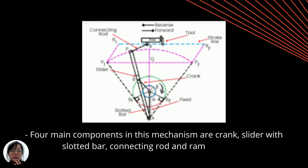The diagram here shows the basic structure of a quick return mechanism. There are four main components: crank, slider with slotting bar, connecting rod, and ramp. The slider is always positioned within the slotting bar and is free to move along the bar. A crank is connected with the gear that rotates at a constant angular velocity. The circle in blue indicates the gear or motor.